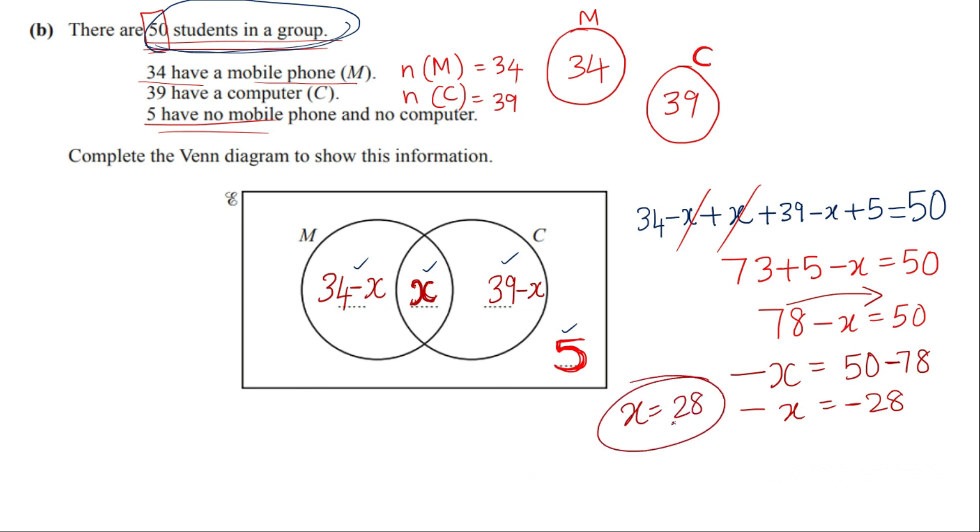Now once you have found the value for x, let me replace it here. This is going to be 28 which is the number of students who have both mobile phone and a computer. So 34 minus x which is 34 minus 28 which is equal to 6. Now 39 minus 28 which is going to be 11.